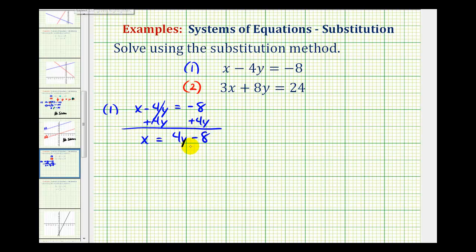The second step is to use this equation and perform substitution into the other equation, or in this case, equation two. If we know x must equal four y minus eight, we can substitute four y minus eight into the second equation for x.